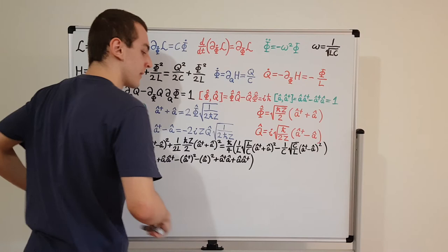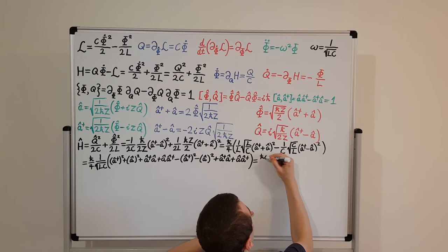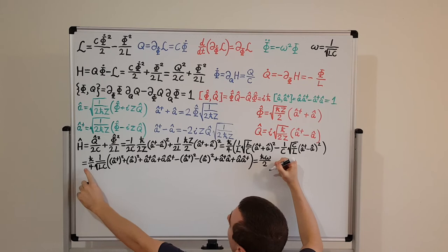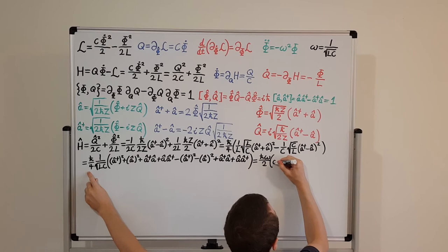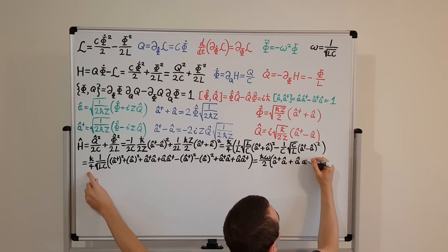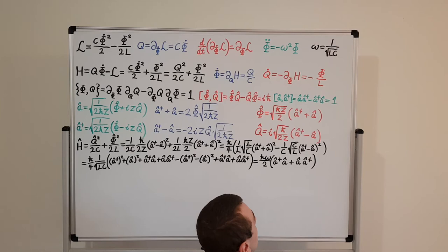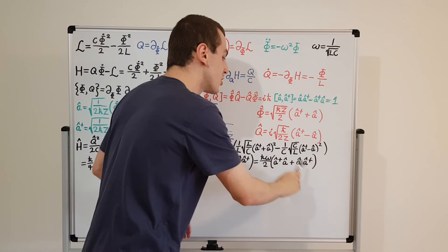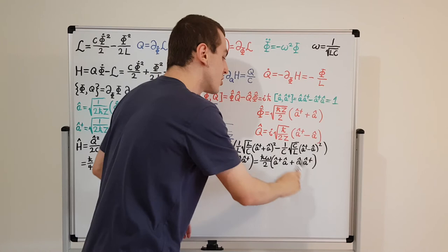We can factor out a factor of two, which combines with the one over four to give h-bar over two. And 1 over the square root of LC is exactly the same as omega. So we can write this in a far more condensed form: h-bar omega over two times (a dagger a plus a a dagger). These operators are not commutative, as we know from the commutation relation.